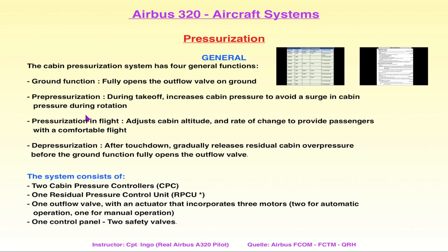Das Outflow Valve am Flugzeug – hinten rechts an der Seite – regelt das Ganze. Es geht millimeterweise auf und zu, damit der Delta-P-Unterschied zwischen außen und innen kompensiert wird. Vergleich Luftballon: Wenn man das Loch groß macht, entweicht die Luft sehr schnell; macht man es ganz klein, geht das langsam. Genau das passiert mit dem Outflow Valve. Wenn man es voll aufmacht, hat man sofort einen Druckausgleich – das wollen wir nicht.